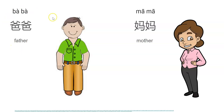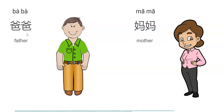Now I want you to say 'father' by yourself: bāpā. And please say 'my father' by yourself: wǒdə bāpā. Now I want you to say 'mother': māmā. And please say 'my mother': wǒdə māmā. Very good. Then how to say 'your father'? Your comes from you: nǐdə. So your father is nǐdə bāpā. And then how to say 'your mother'? Nǐdə māmā. Very good.